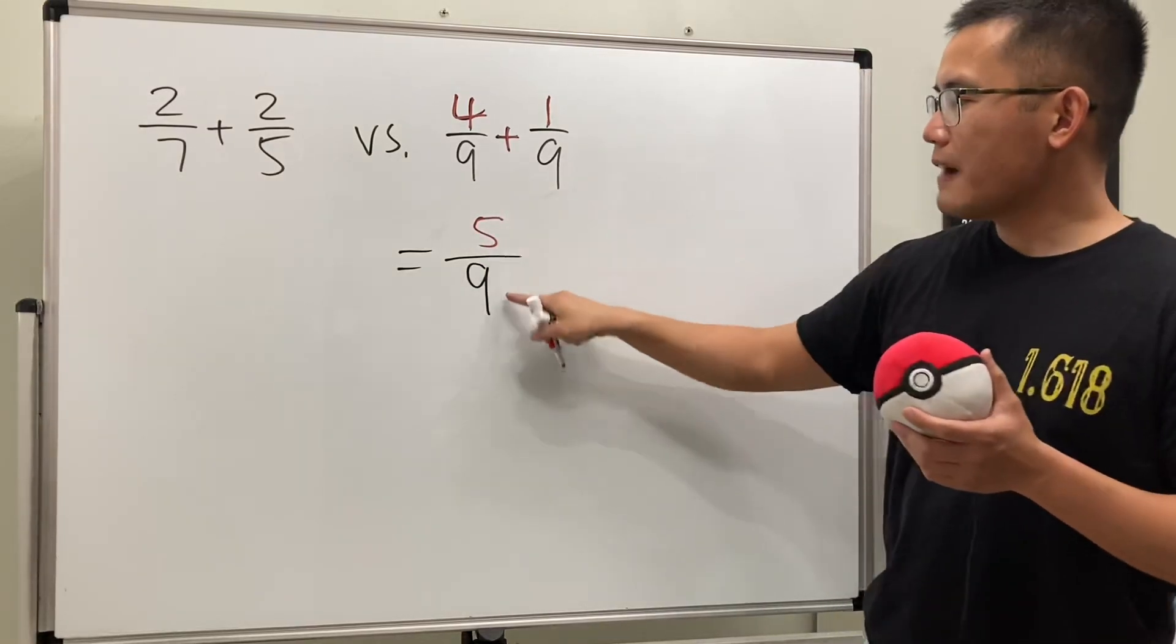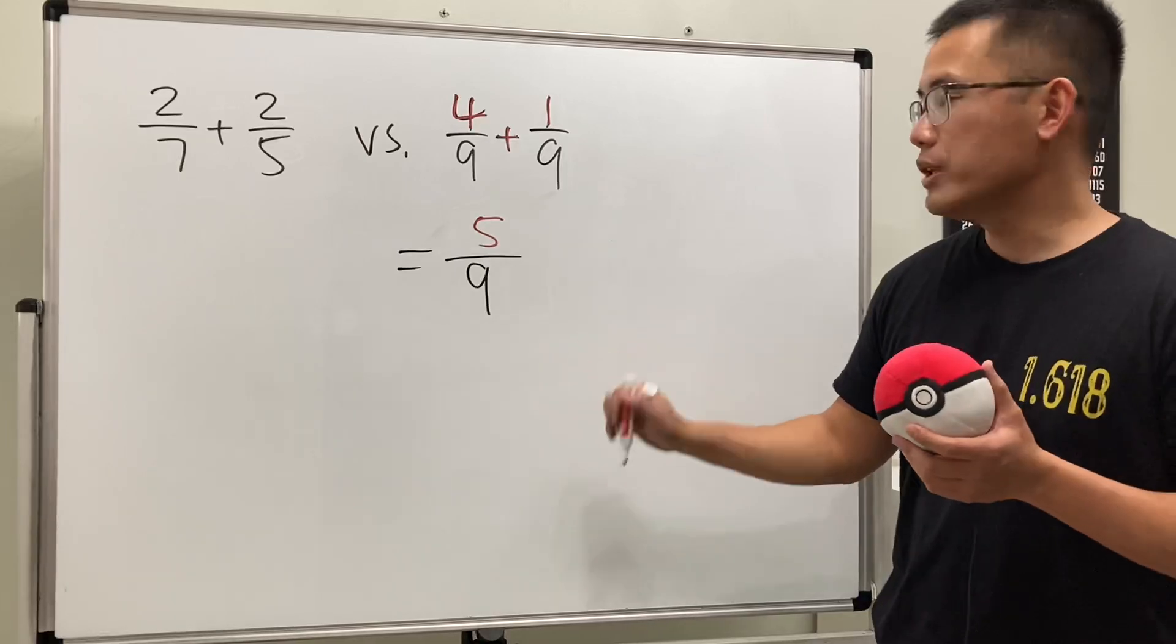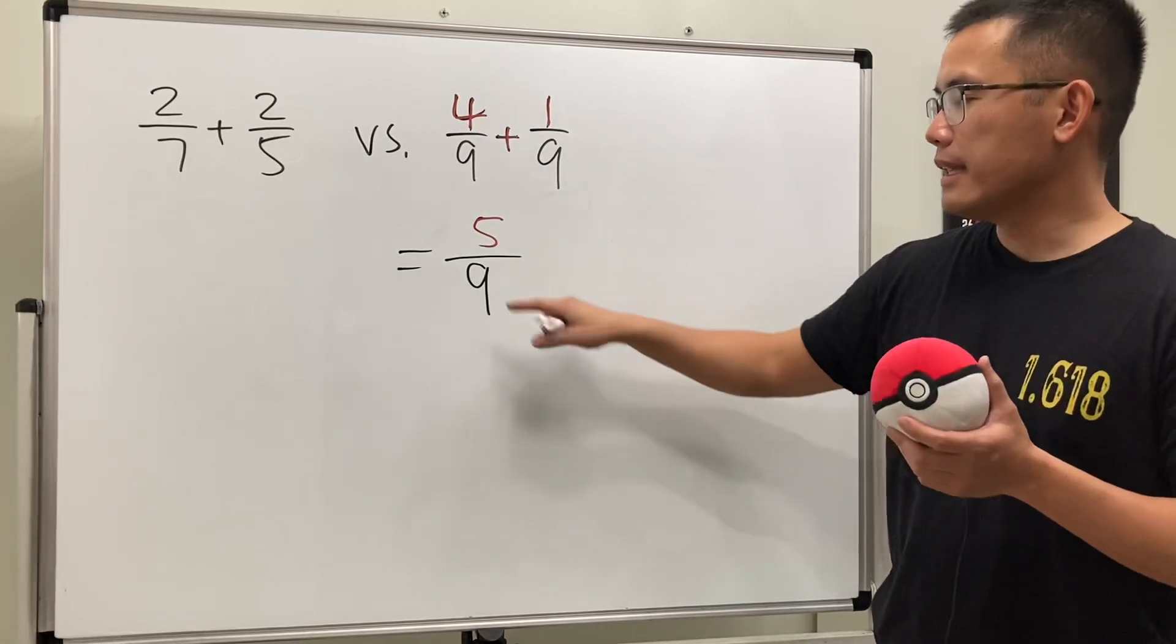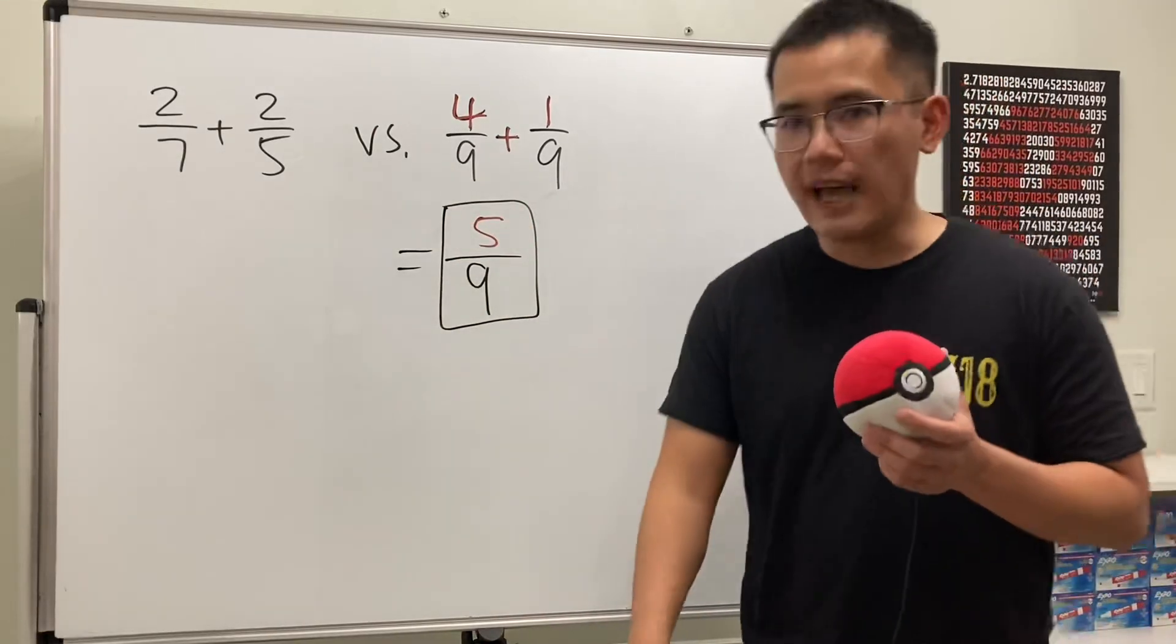Look at 5 over 9. Can we reduce this? No we cannot. We cannot find a number that goes into 5 and that goes into 9, so we are done. The answer is just 5 over 9.